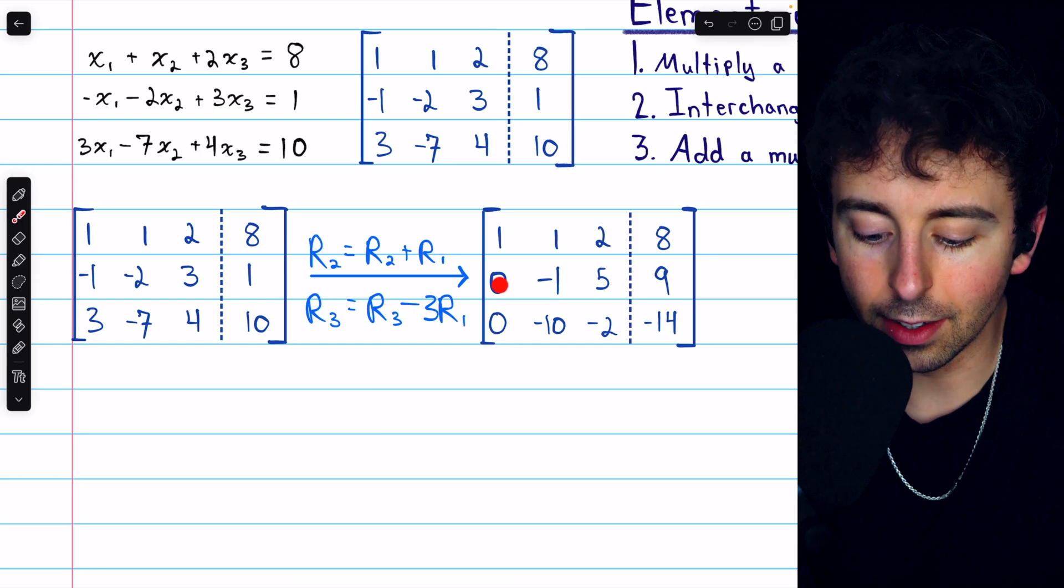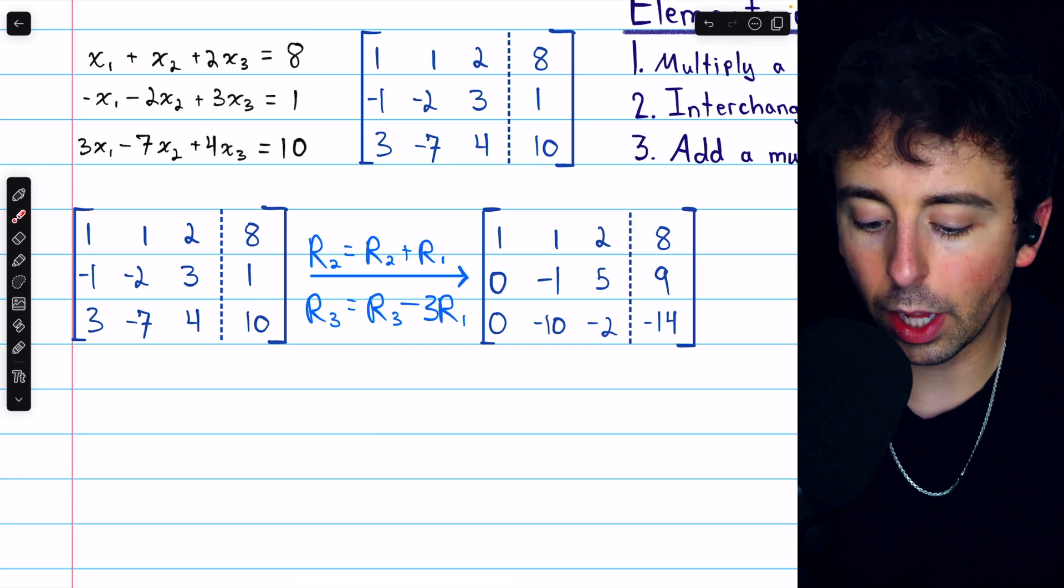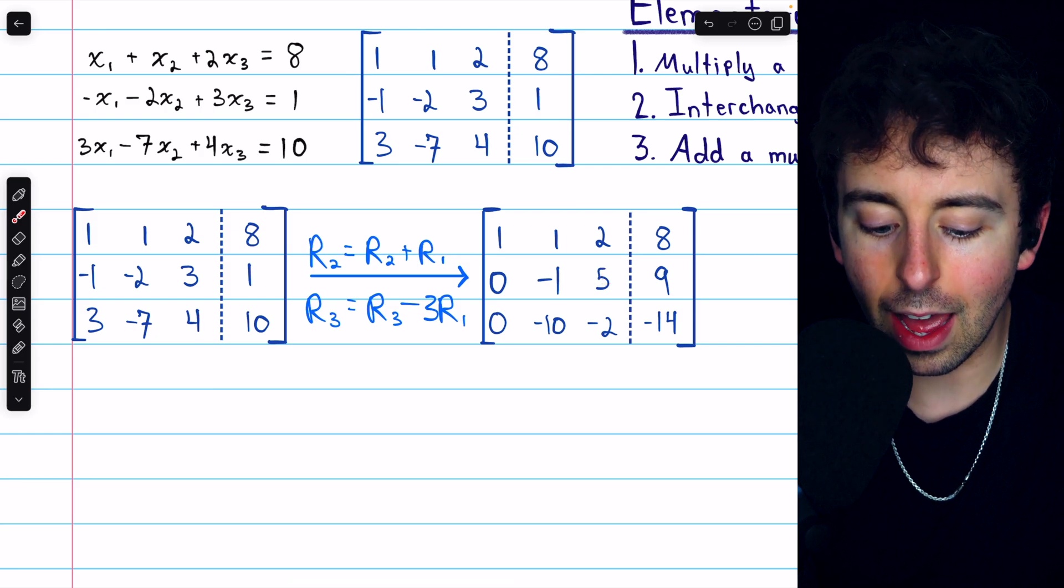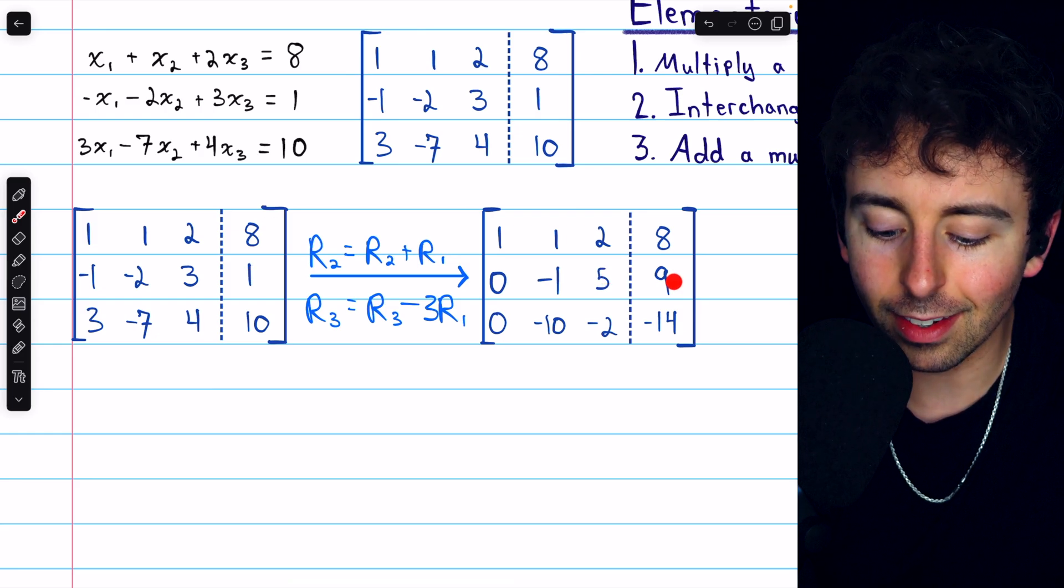Negative 1 plus 1 is 0. Negative 2 plus 1 is negative 1. 3 plus 2 is 5. And 1 plus 8 is 9.